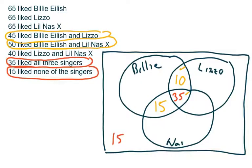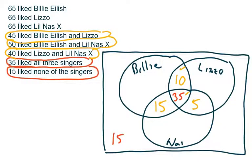Finally, there's one more piece of data involving two sets: 40 people like Lizzo and Lil Nas X. We've already counted 35 of those, so we don't want to put 40 there — that would neglect the people already counted. The 40 has to be the sum of those two regions, so there are exactly 5 more people. So the pattern is: start with all three sets, move to two sets, and last look at data involving only one set.